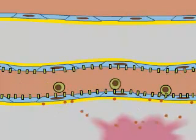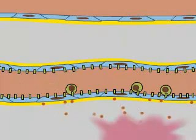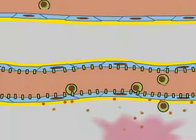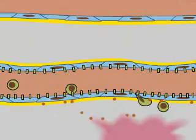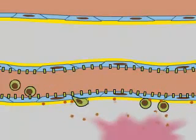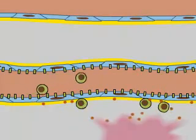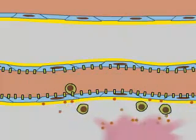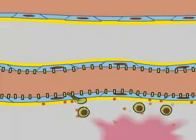There, they adhere tightly and squeeze between endothelial cells without disrupting the vessel walls, then crawl out of the blood vessel into the adjacent connective tissue.